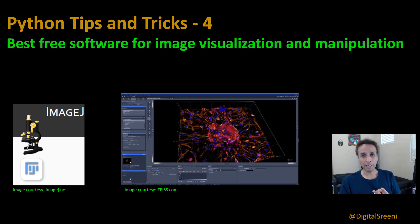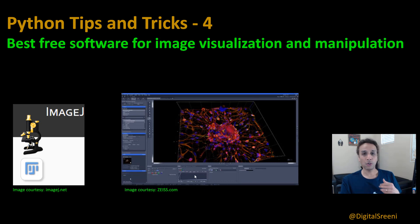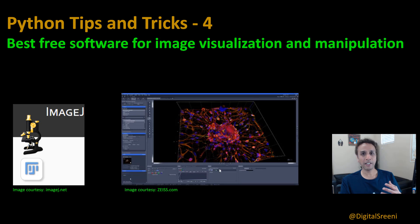There are two things that I primarily use. One is called ImageJ — in fact it's called Fiji, which is basically ImageJ — and the other one is called Zen Lite. This is from Zeiss. There's a clear reason why I use Zen and also ImageJ.